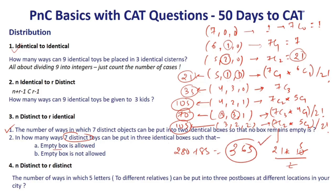If empty boxes are allowed, the answer is 365. If empty boxes are not allowed, remove cases containing zeros — that eliminates the (7,0,0), (6,1,0), (5,2,0), and (4,3,0) splits. So the answer becomes 365 − 64 = 301.